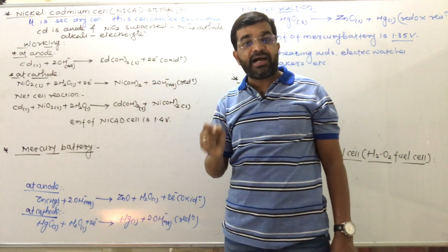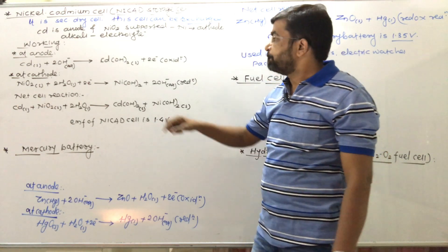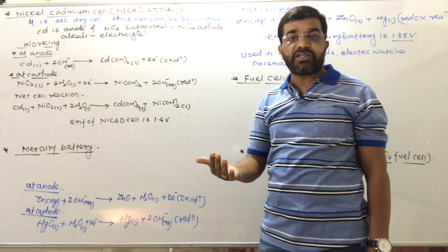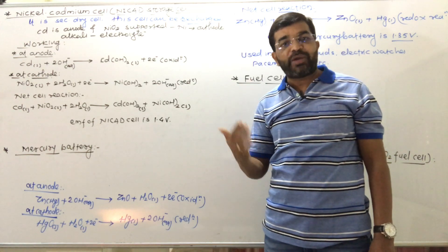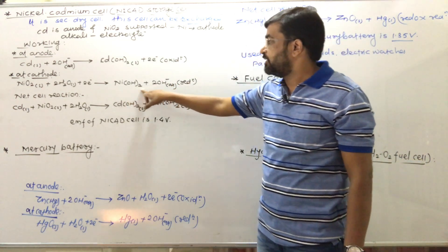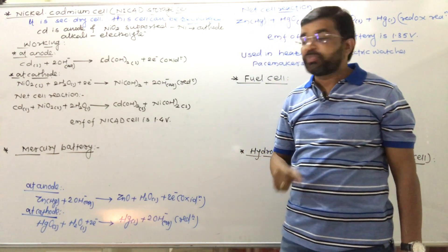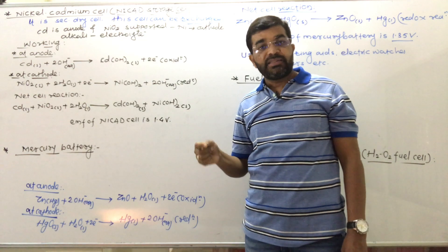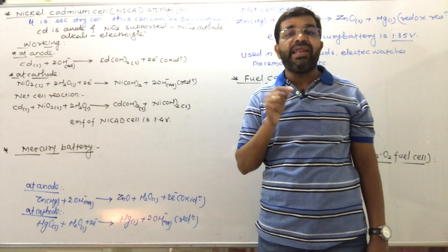At the cathode, nickel dioxide (NiO₂) undergoes reduction by reacting with water and gaining electrons. NiO₂ accepts electrons — that is reduction — and reacts with water to form nickel hydroxide and hydroxyl ions. The overall or net cell reaction is obtained by combining the anodic oxidation and the cathodic reduction.